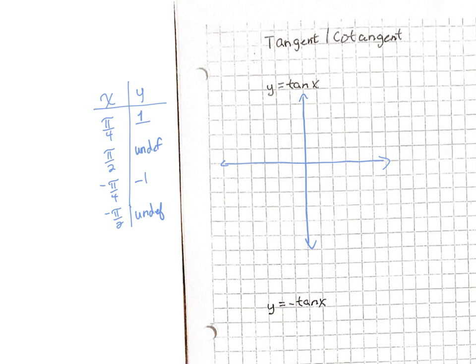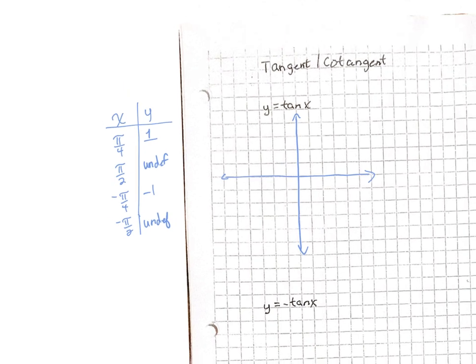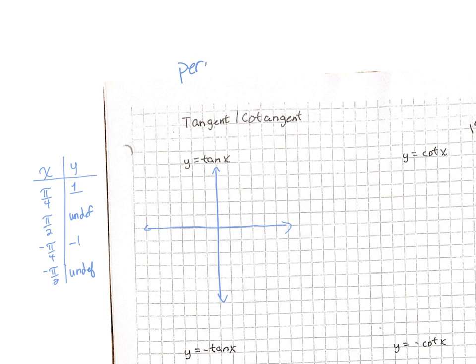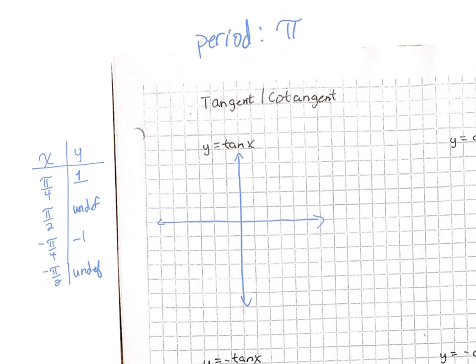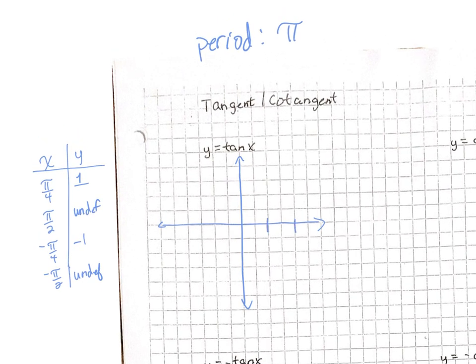We went to the unit circle, looking at specific points to help us think about what this graph looks like. The key here is remembering that the period for both tangent and cotangent is just pi. What's going to be special about the tangent graph is that we're going to do half of the graph to the right of the origin and the other half to the left. So I'm going to draw some hash marks here, and we're going to label pi over 4, pi over 2, negative pi over 4, and negative pi over 2.